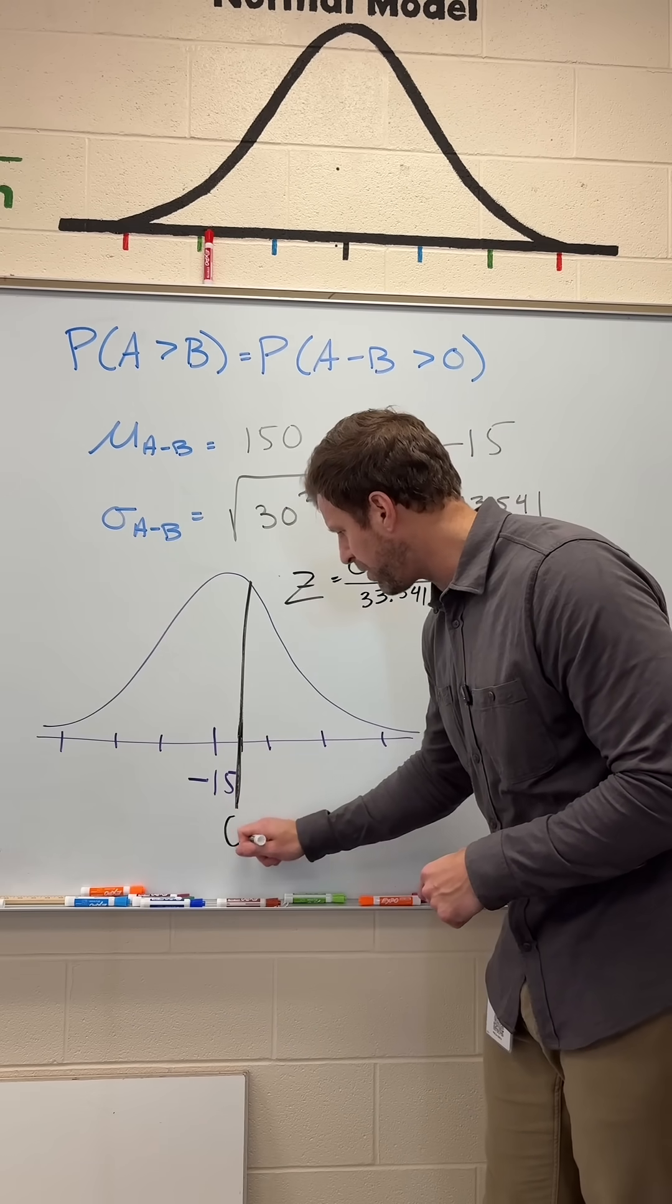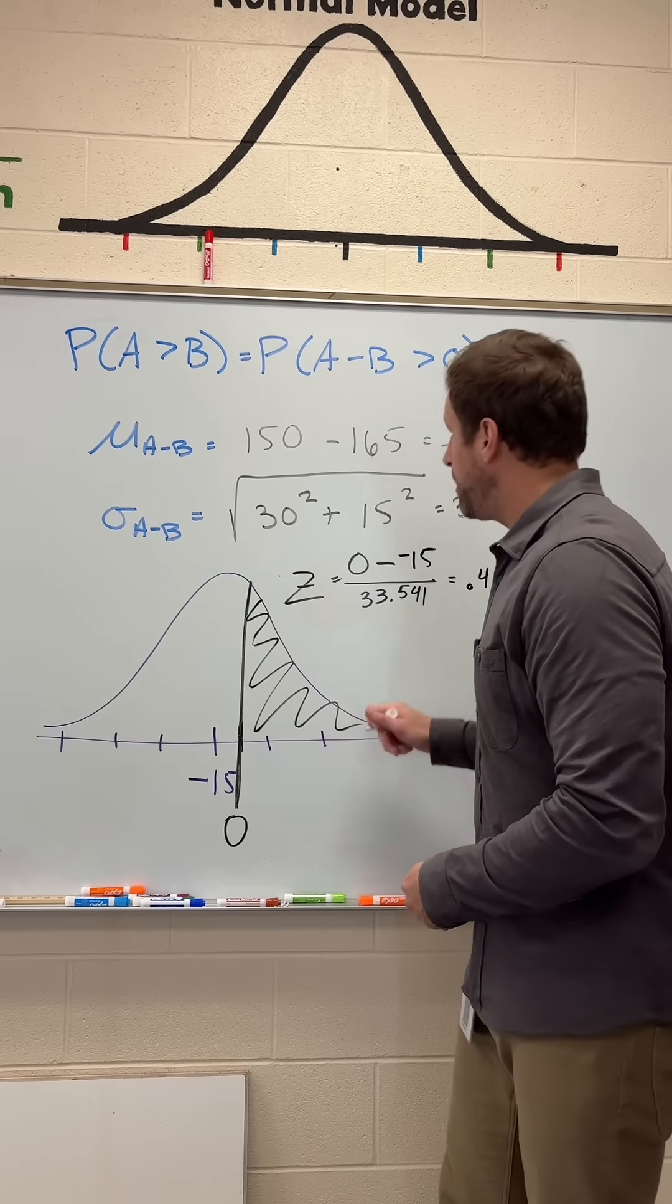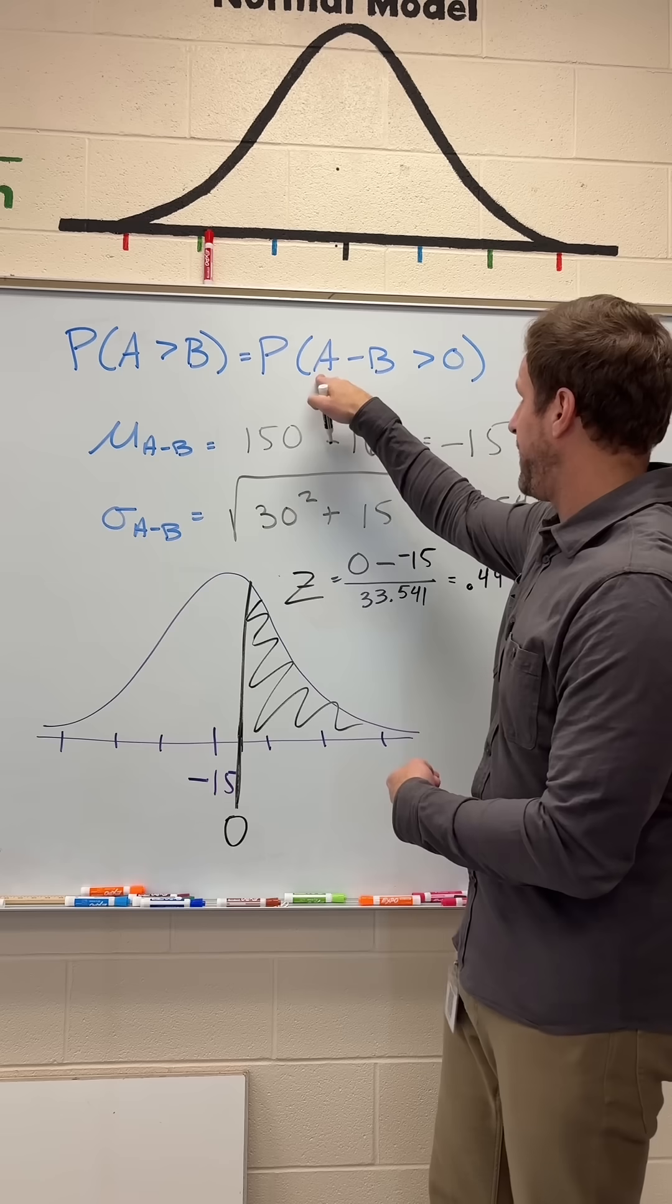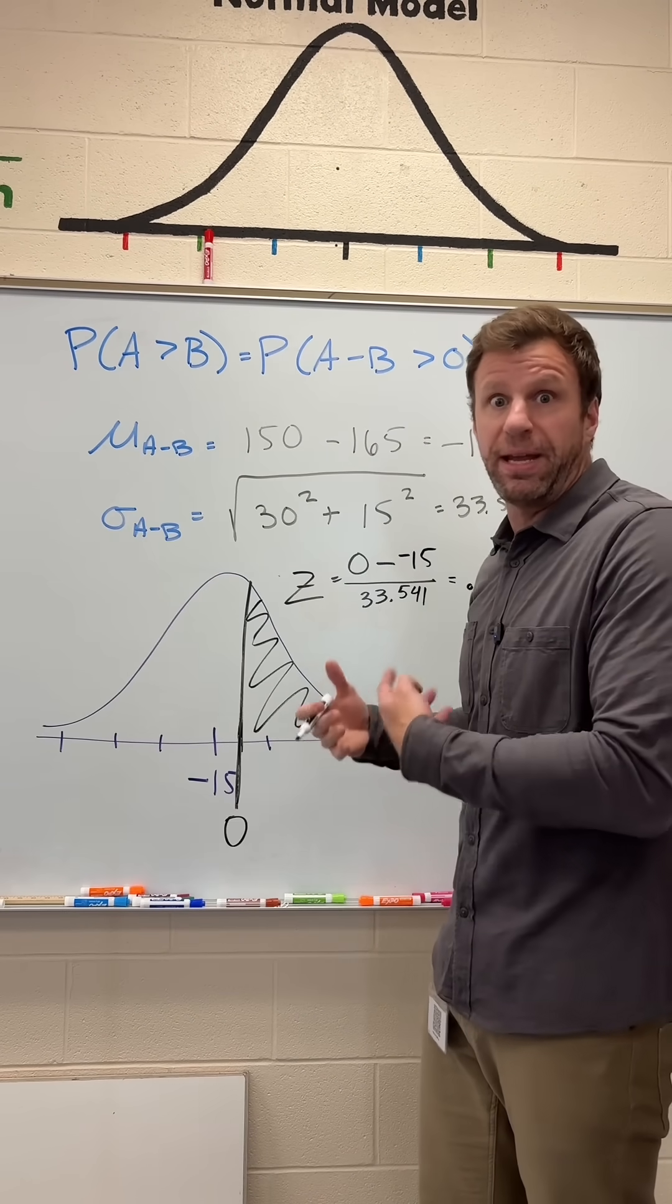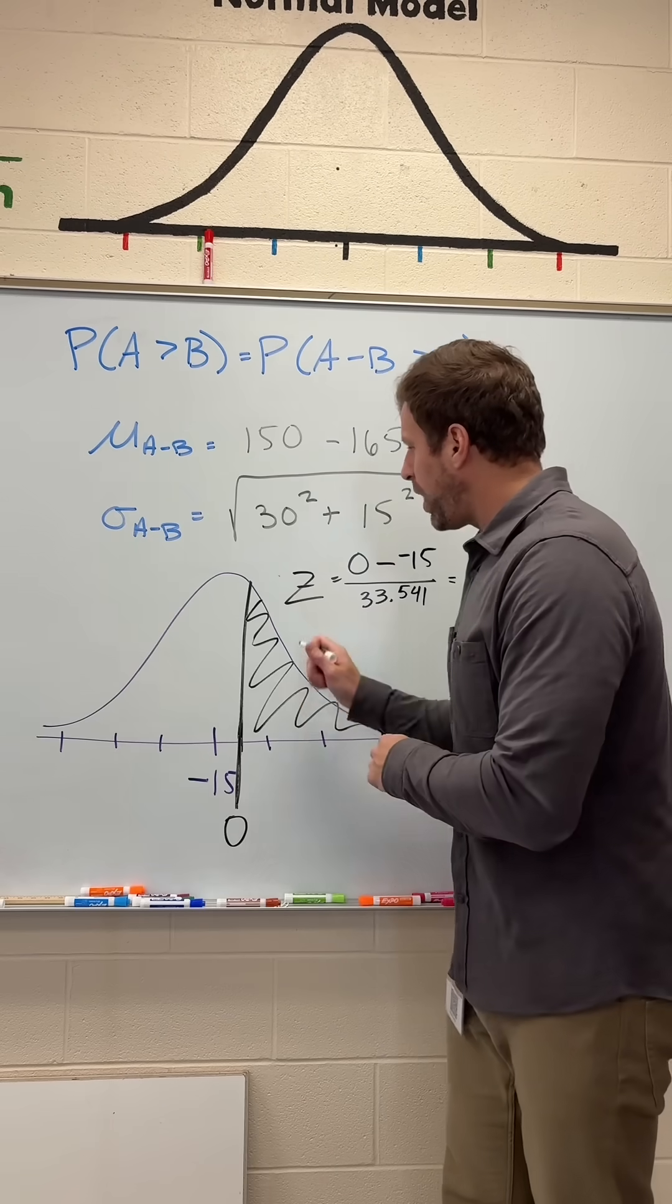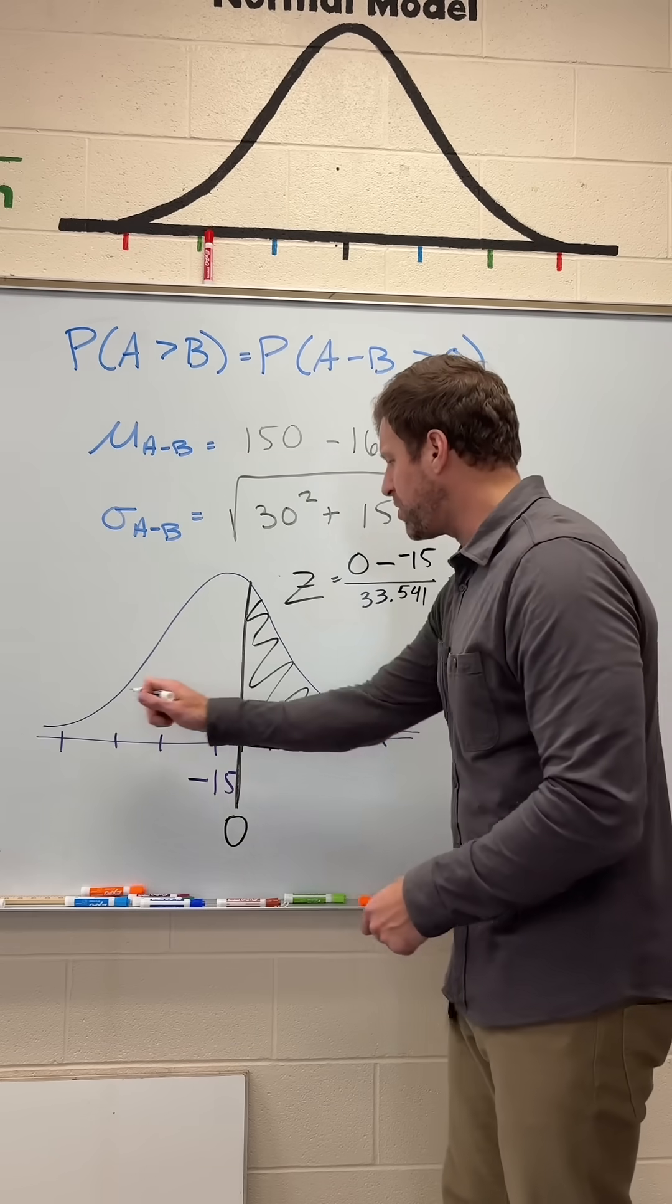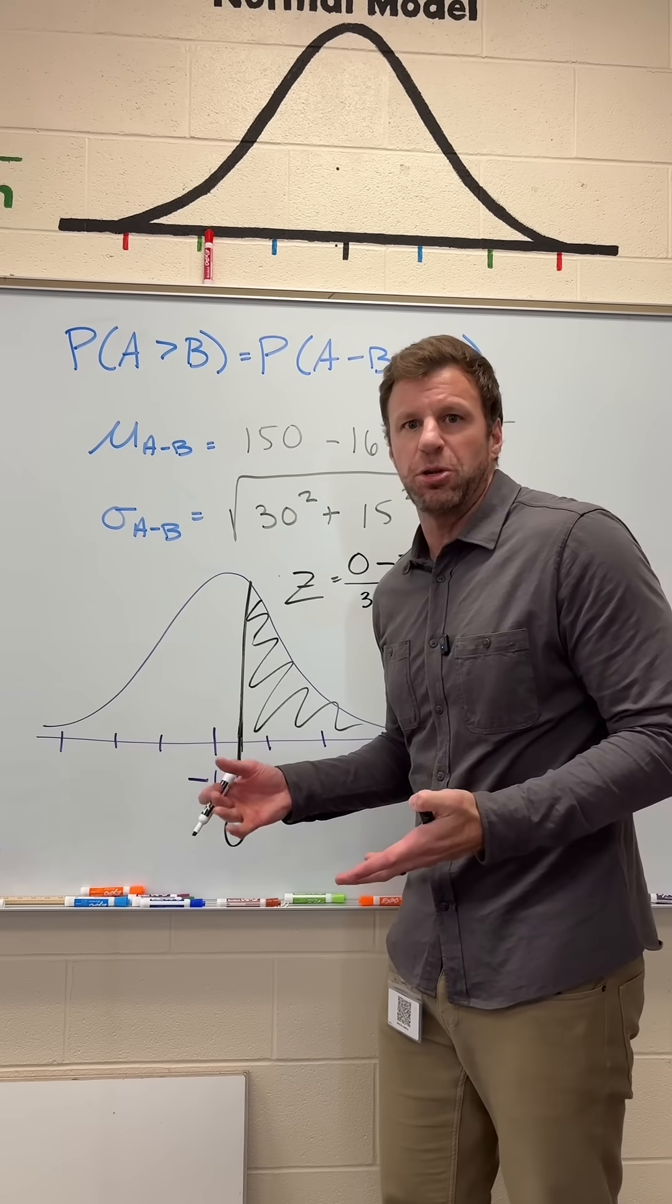Somewhere right around there is where zero falls. And anything greater than zero means that Andy's score must have been bigger than Bob's because if Andy's score is bigger, A minus B is going to result in a positive number, meaning Andy did better. And anything over here below zero is where Bob does better. Notice that that section is a little bit bigger because, well, Bob's supposed to do better.